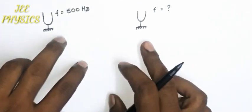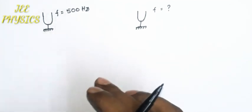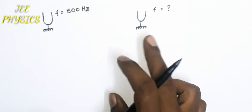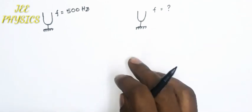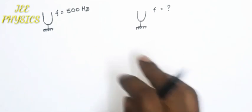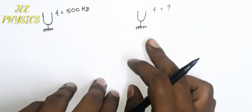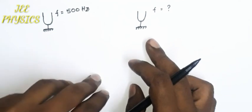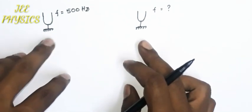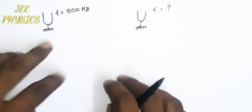Today I have two tuning forks. One has a frequency of 500 Hz and the other is nearly identical but not exactly identical. The frequency of the unknown tuning fork is between 490 and 510 Hz. We can find the unknown frequency with the help of the phenomenon of beats.